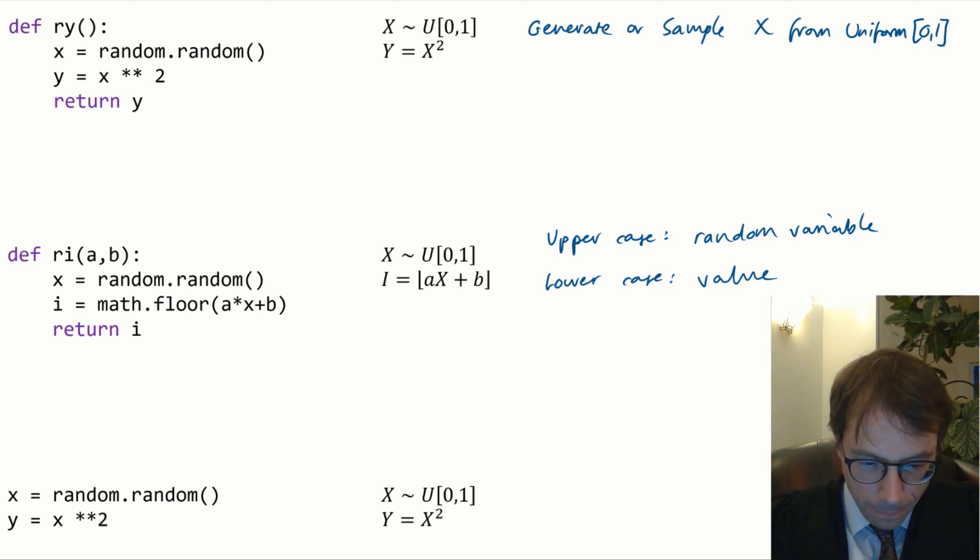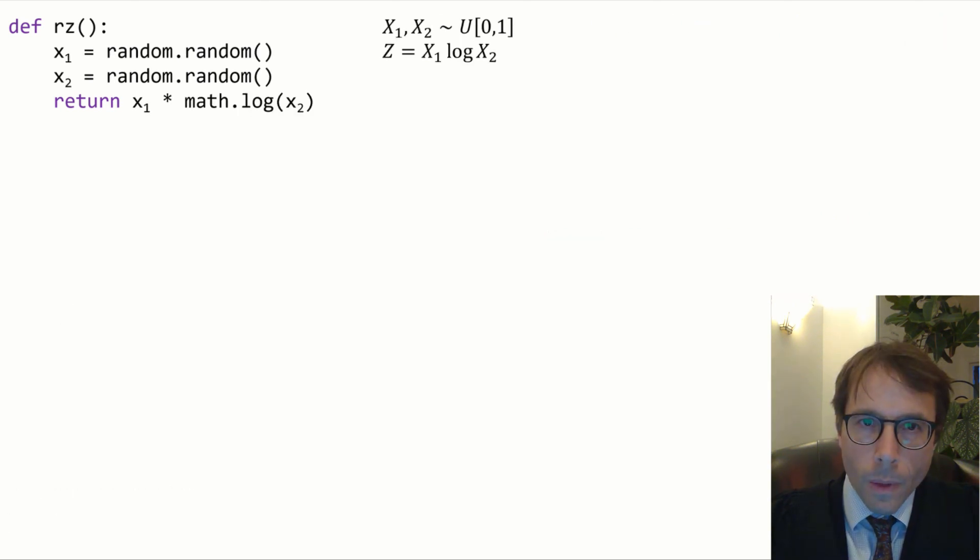Next example. In this code x1 and x2 are generated independently. Knowing the value of one gives no information about the value of the other. In the maths notation, it's usually implied that random variables are meant to be generated independently unless we explicitly state otherwise.